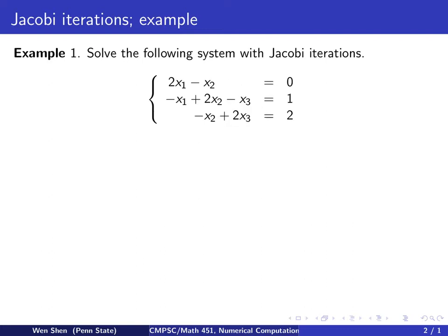We notice that this system here is tridiagonal and diagonal dominant, where the diagonal element is big. And also we can actually easily find the exact solution, which is 1, 2, 2. You can easily plug in and verify x equals to x1 is 1, x2 is 2, x3 is 2.